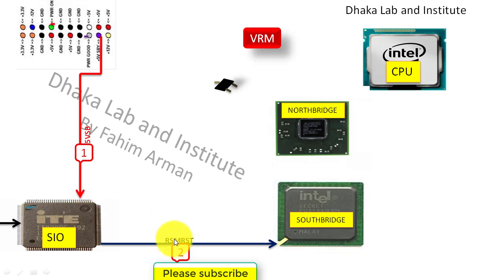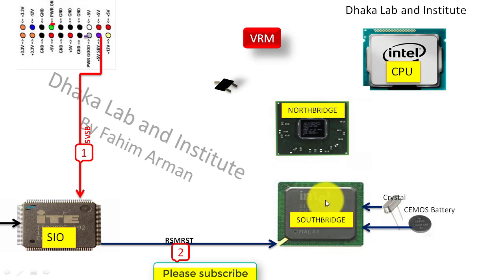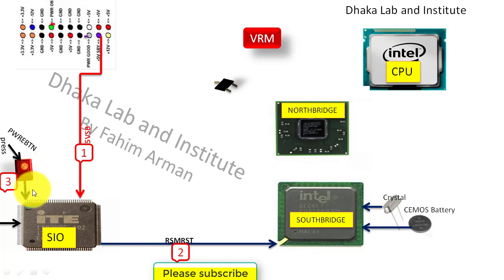The RSMRST signal enters into the South Bridge. The South Bridge also gets crystal frequency — if the crystal is OK and providing frequency, and if the CMOS battery passes voltage, and if the RTC section is OK, then the South Bridge is confirmed OK.